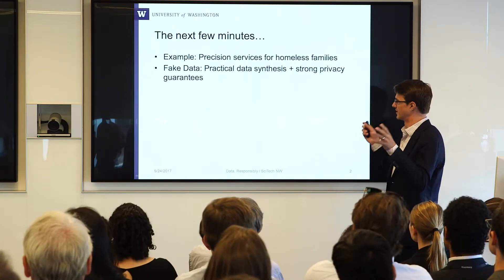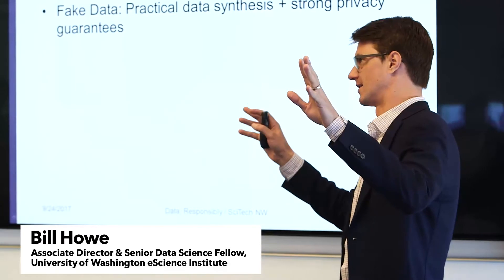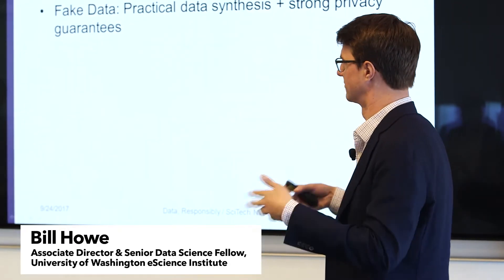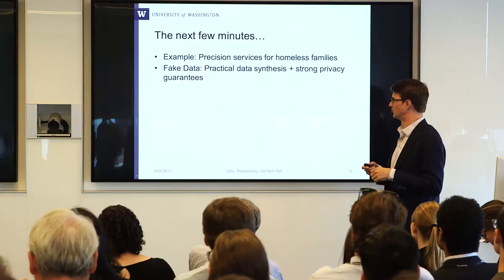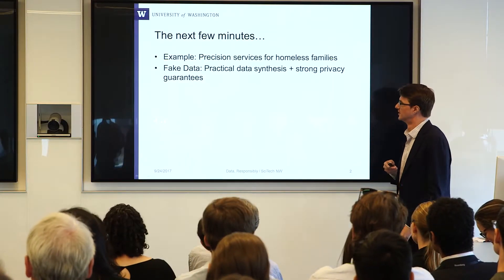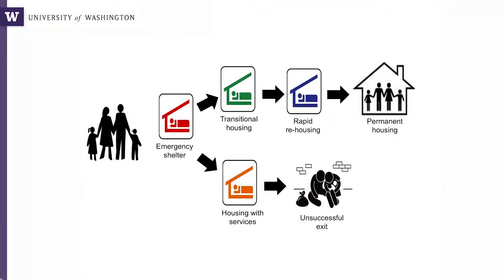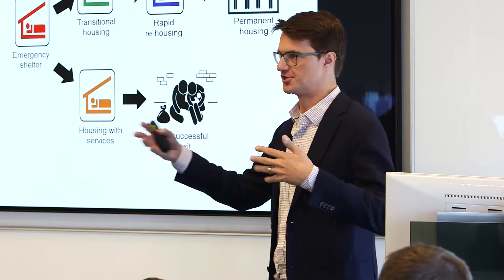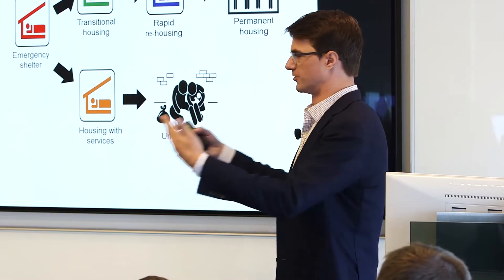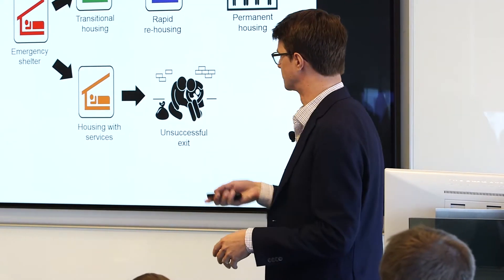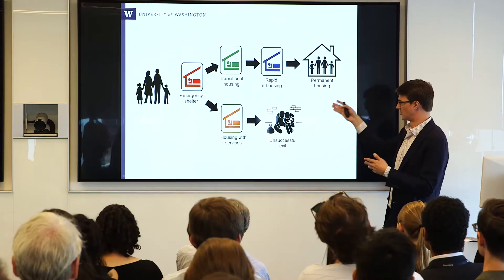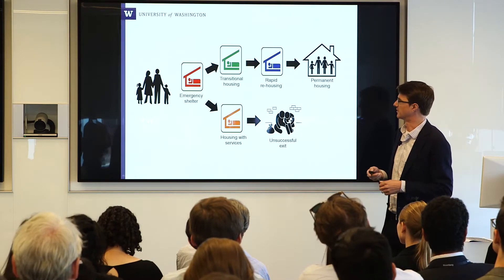I want to talk about an example that motivated us, and part of my point is that this seems to apply broadly — everybody is coming out of the woodwork to talk to us about this capability. In the Seattle area, there's the observation that different pathways through different services for homeless families tend to lead to different outcomes, and which pathways are more efficacious is largely not well understood, in part because you have to integrate data from many different agencies. The overall goal is to recommend very specific services for particular families — from emergency shelters through transitional housing to rapid rehousing — with different outcomes for people with different backgrounds.